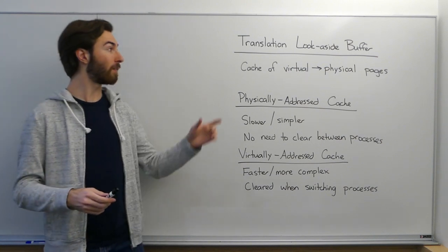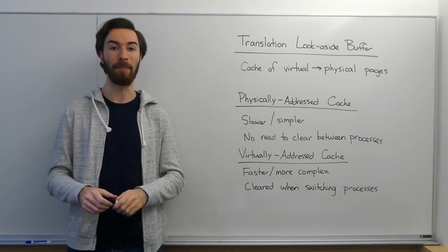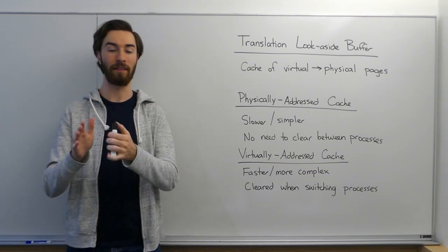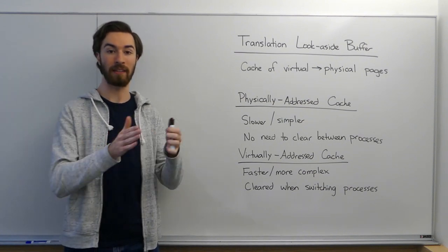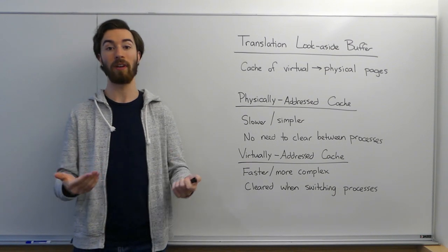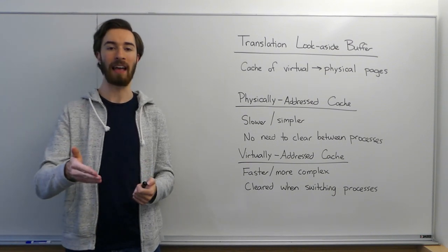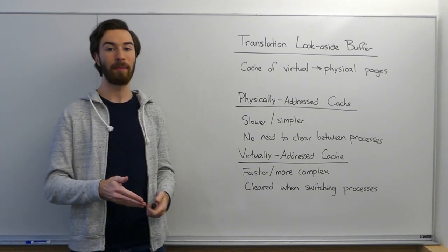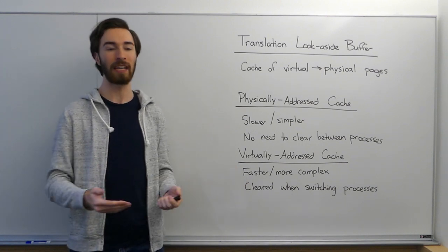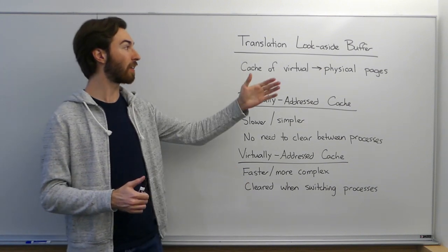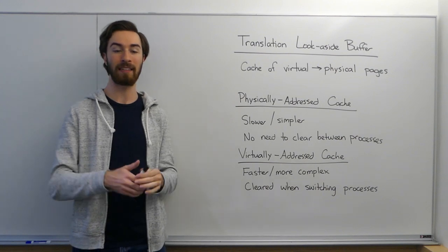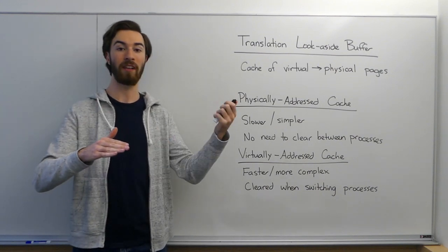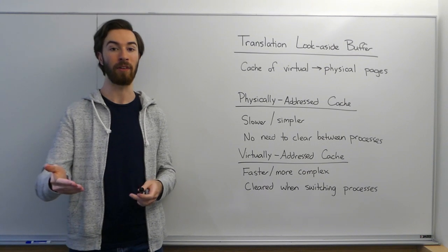The first one is the translation look-aside buffer. This is a cache specifically used to translate virtual addresses to physical addresses. Remember, a normal cache is a way to take an address and return some memory that is at that address. But there are many different types of caches, and the translation look-aside buffer is specifically designed to take in virtual pages and return the physical page associated with that virtual page.